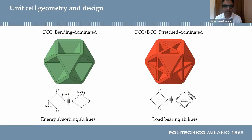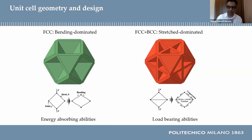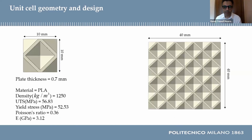We use two different plate-based lattice geometries for this research. The first one is the FCC, which is a bending-dominated structure, and we call it the base. The second unit cell is FCC plus BCC, which is a stretch-dominated topology, and we call it the reinforced. The length of the unit cells is 10 mm in x, y, and z directions, and the plate thickness was set to 0.7 mm due to manufacturing limitations.